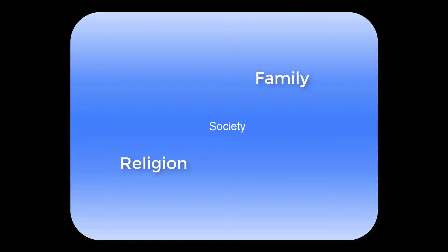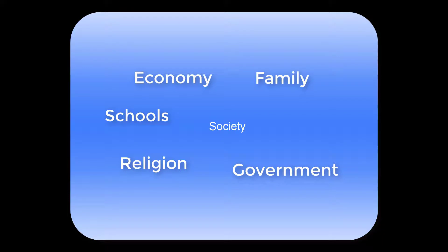For example, all societies have a family structure, a dominant religion, an economic system for exchanging goods and services, a government of some kind, an organization to educate its people, and an institution to deal with their health needs. Each of these social structures or organs has a function, and the health of society depends on how well they do their jobs.